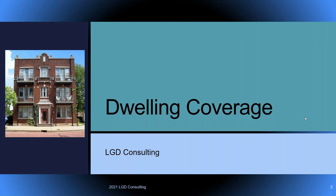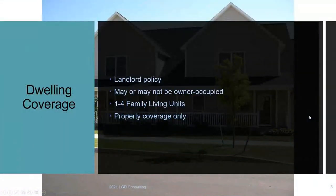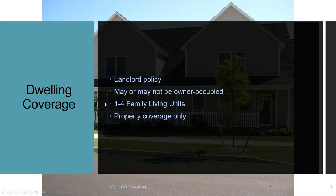Another question asks: 'A prospect would purchase a dwelling policy instead of a homeowner's policy for which of the following reasons?' The answer is because they don't live there. You'll probably get at least one of these on the test, most likely both. When you think dwelling, think landlord — for the test, it's not owner-occupied.